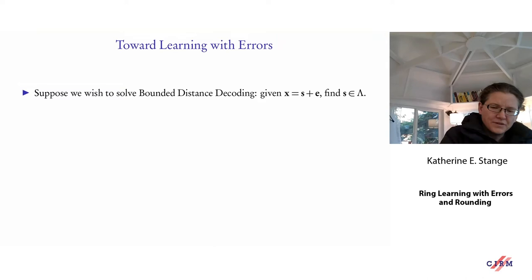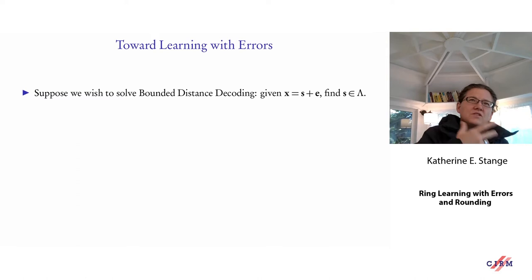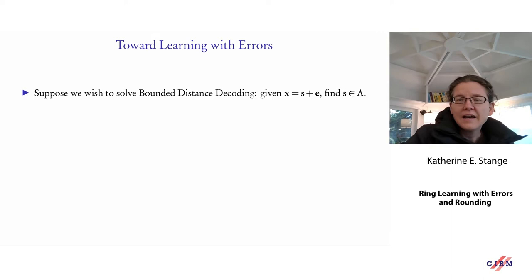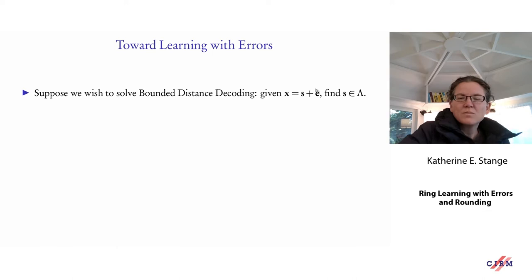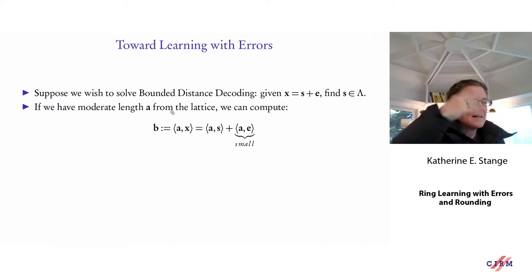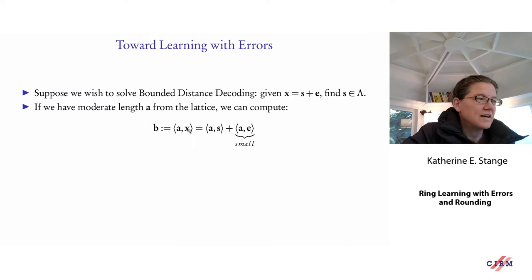Those hard lattice problems don't look very amenable to building cryptography, and that's where Learning With Errors has been useful. As a thought experiment to motivate LWE: suppose we wanted to solve Bounded Distance Decoding, meaning I'm given an x not in the lattice and want to find an s in the lattice differing from x only by a small error e. If we had some moderate-length vector a in the lattice, I could compute a dot-product of a with x.